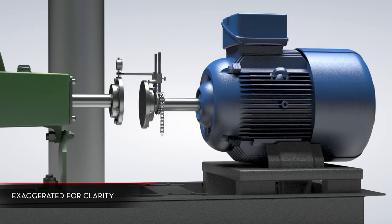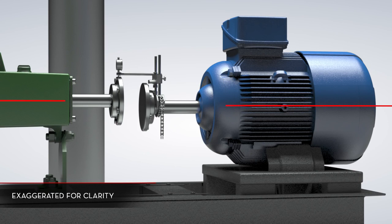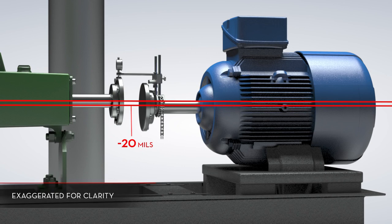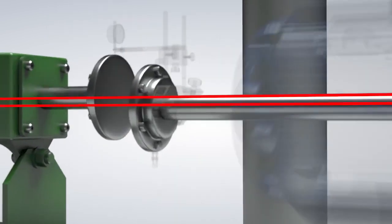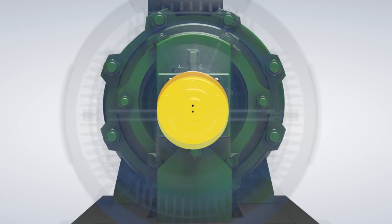Next, we'll lower all four feet of the movable machine by 20 mils to create minus 20 mils of vertical offset misalignment with zero horizontal offset. Turning to view the misalignment axially, we can see the center points of the shafts, 20 mils apart.